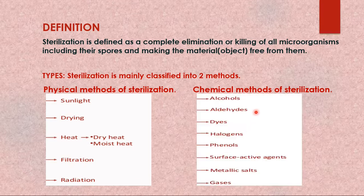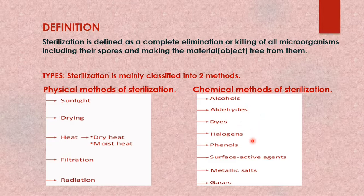The chemical method of sterilization is also called disinfection, and it can be done by application of chemicals like alcohols, aldehydes, dyes, halogens, etc. We will discuss in detail both physical and chemical methods of sterilization.